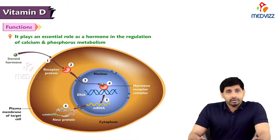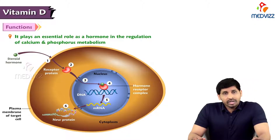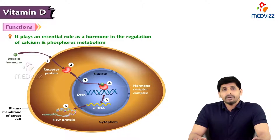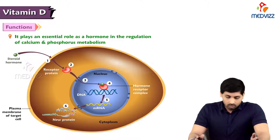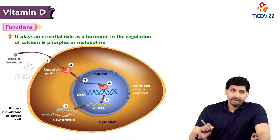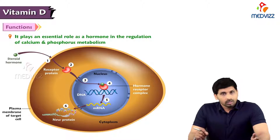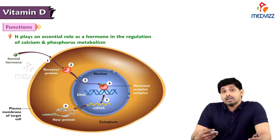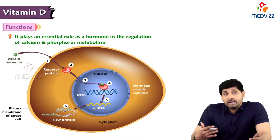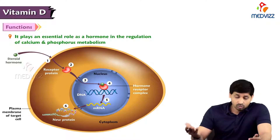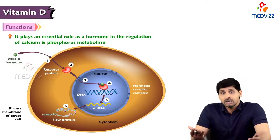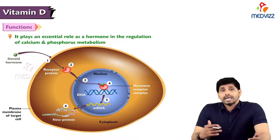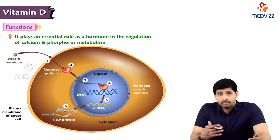As we mentioned in our previous video, vitamin D has been considered as a hormone rather than a vitamin. The major proof is that it plays an essential role as a hormone in the regulation of calcium and phosphorus metabolism.